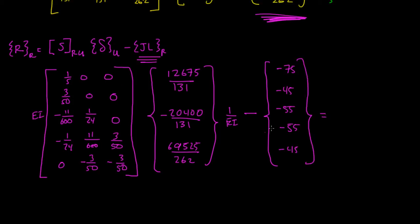And if we solve all this out, notice that the EIs cancel out, our restrained reactions are going to be 94.35 kip foot, 50.80 kips, 46.74 kips, 64.04 kips, and finally 38.42 kips.